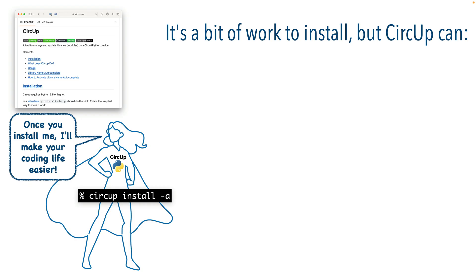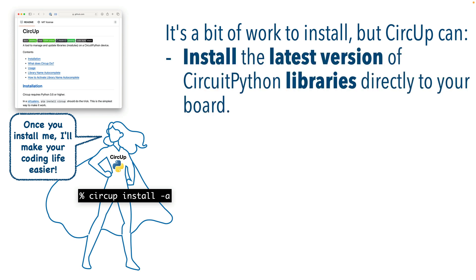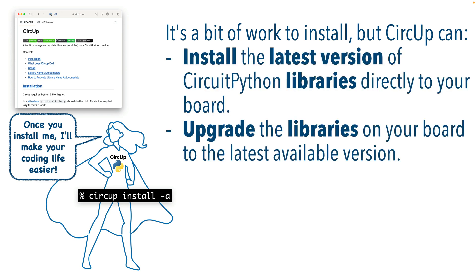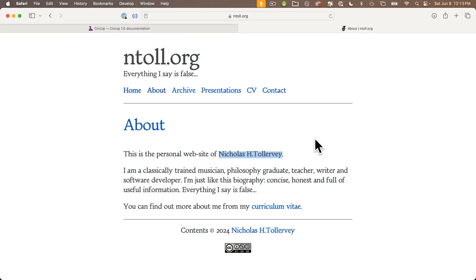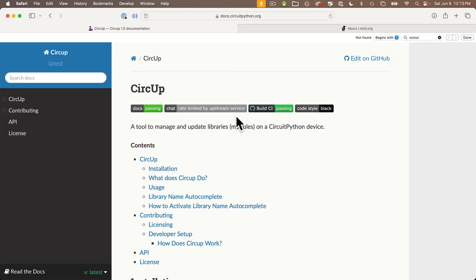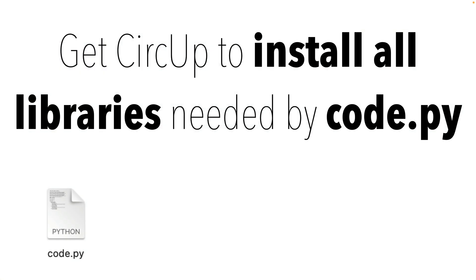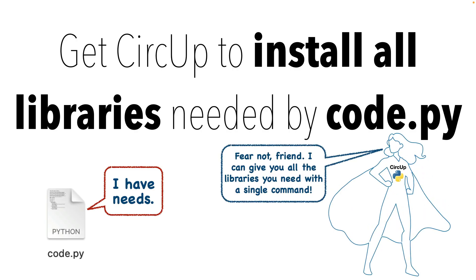Fortunately, there's a great utility that we can use that will make working with libraries much easier, and it's called Circup. You use Circup to install library files on your board, and it will also upgrade any files if new versions are available, and it'll even look at your Python code and install any additional files that that code needs to run. Shout out to Nicholas Tolervais, Circup's creator. It's free, open source, and now lives on the Adafruit GitHub pages. First, I want to show you how we can use Circup to install libraries needed by the code on our board.